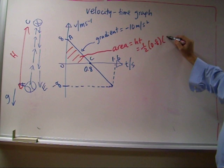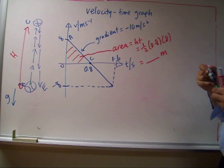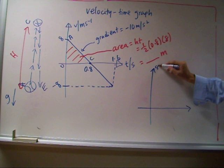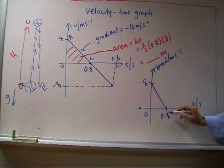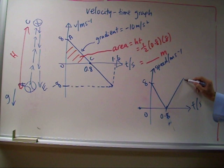Now this is a velocity-time graph. Of course, if we are interested in the speed-time graph, there's no positive or negative, so everything will just be on the positive side. So it will be from 8 to 0 in 0.8 seconds, and then up to 8 again in another 0.8 seconds. Okay, that's all, thank you.